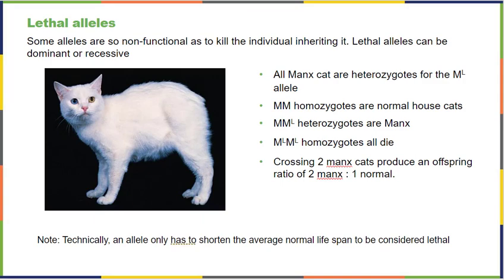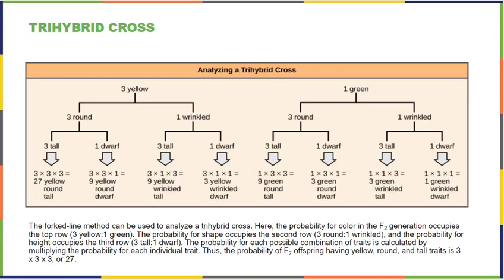There are some lethal alleles — so non-functional that if you have them, you die. But sometimes having a lethal allele means interesting traits. Manx cats that are heterozygous for a specific allele don't have tails; if you're heterozygous you survive, but if you're homozygous dominant for that allele the kitten will never be born. These crosses can get even more confusing when you do them with three traits, and it's far easier to do the math and multiply your odds together than to draw an extremely large Punnett square.